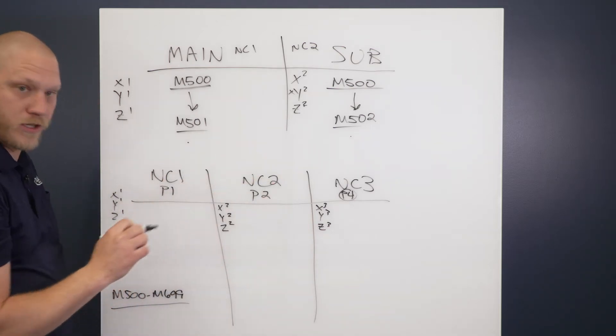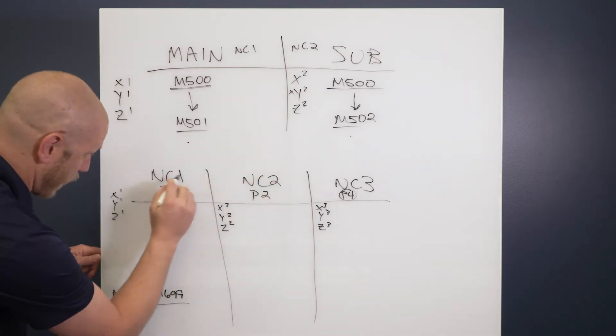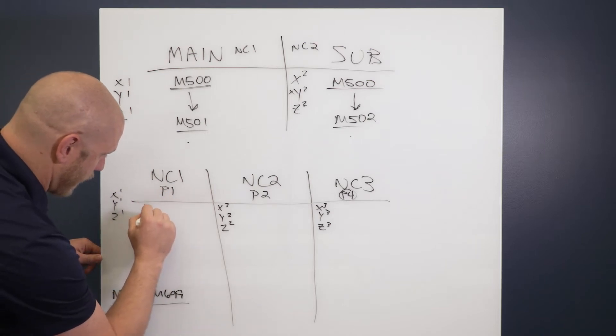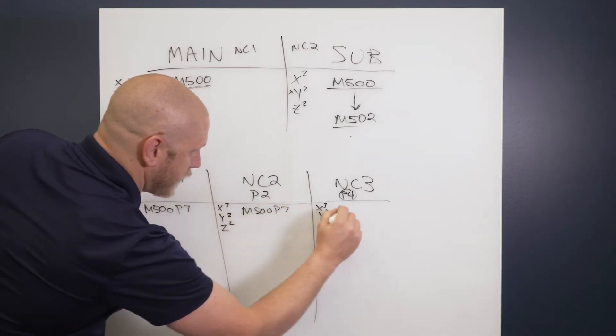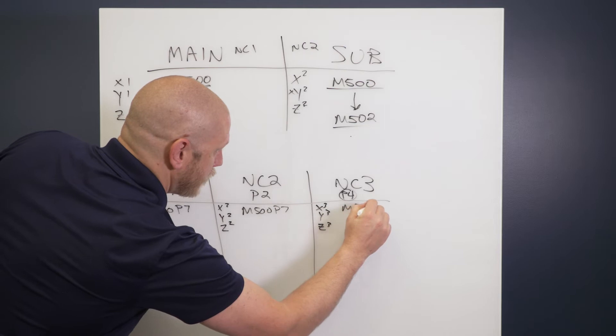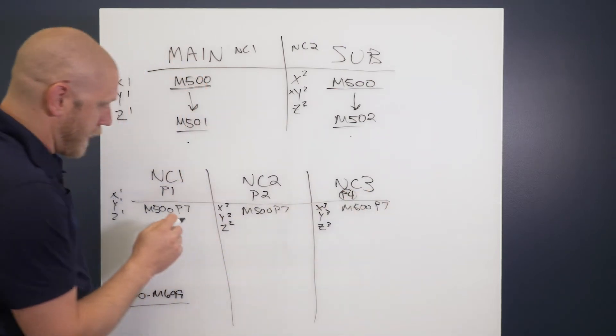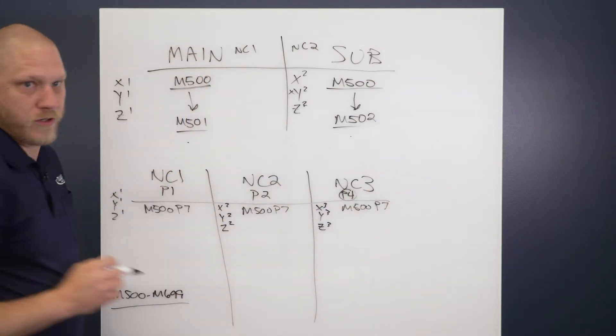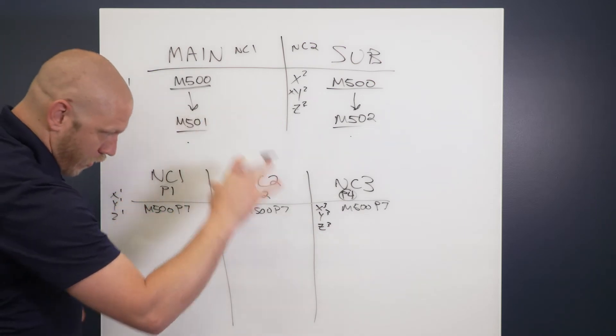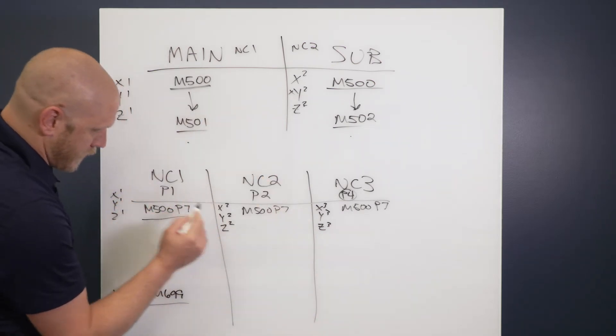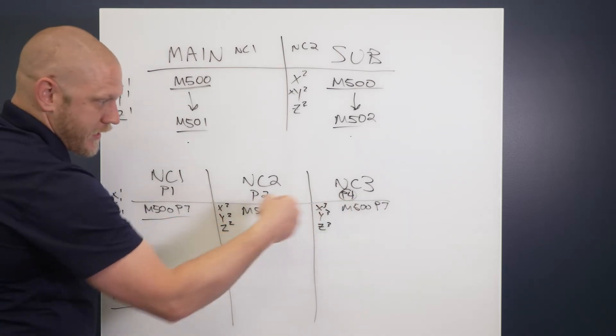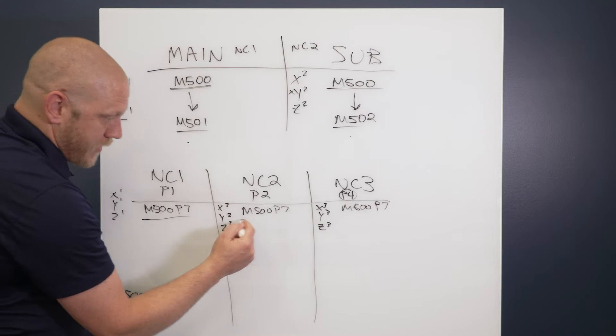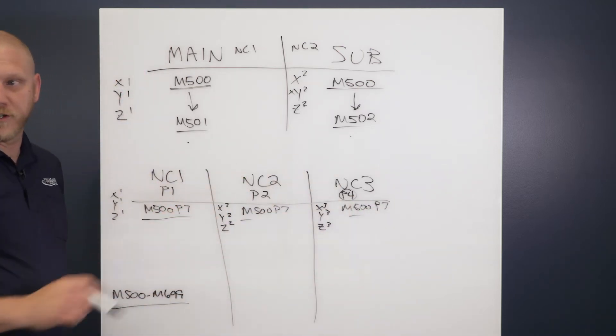So how this works, let me go in a little more detail here. If I want all of these to wait, it's M500 P7. M500 P7 and M500 P7. One plus two plus four equals seven. In order for all the programs to continue, if this one hits M500 P7 first, these will continue to keep working and this will sit until this one and this one reach M500 P7.